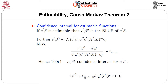Of course, c-transpose beta-naught minus c-transpose beta divided by sigma-hat times the square root of c-transpose (X-transpose X) g-inverse c follows a t-distribution with n minus p degrees of freedom. Hence, the 100(1 minus alpha) percent confidence interval for c-transpose beta is c-transpose beta-naught plus or minus t_{alpha/2, n-p} times sigma-hat times the square root of that same quantity. Note that c-transpose and c are used interchangeably throughout the lecture slides.